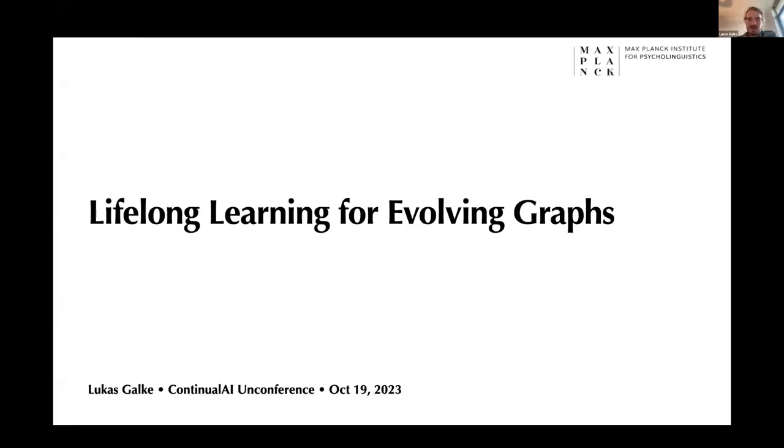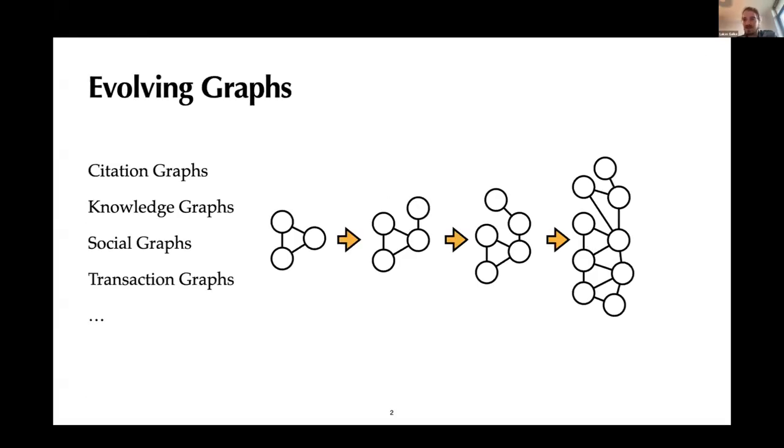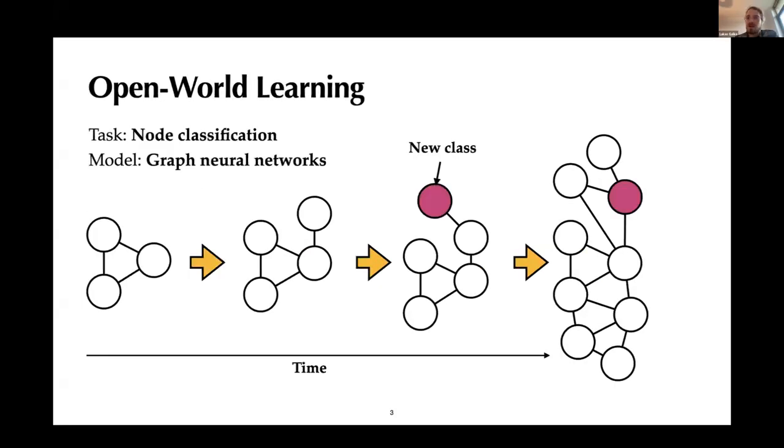And I find that particularly interesting since evolving graphs appear at many places in the wild, or at least in the internet or in publication metadata graphs, and knowledge graphs, social media, or even financial transaction graphs. And in particular, we consider the problem of classifying each node, for example, classifying a research paper into medicine or computer science.